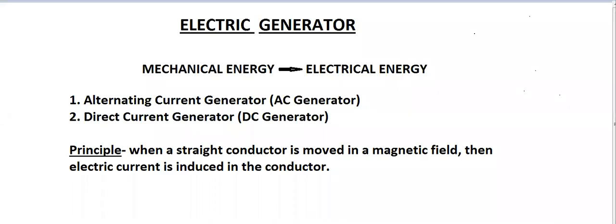Today's topic is electric generator. An electric generator is a device for producing electric energy, electricity, or electric current. The electric generator converts mechanical energy into electrical energy.